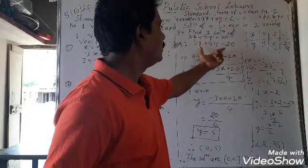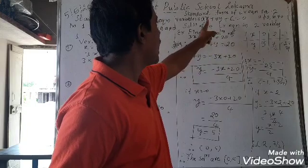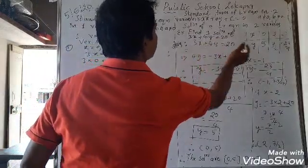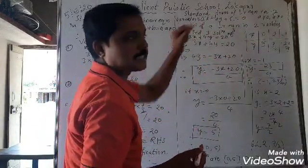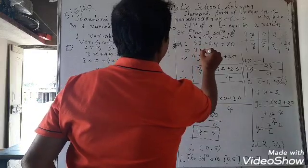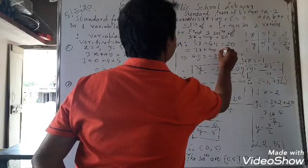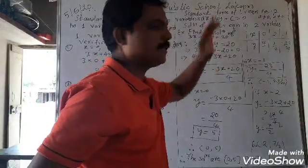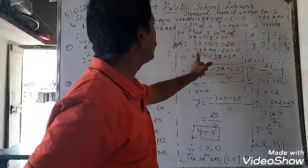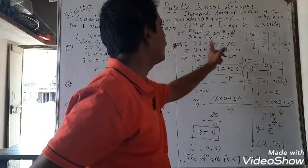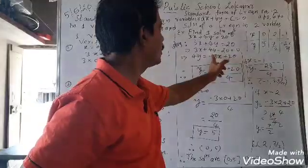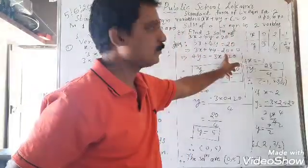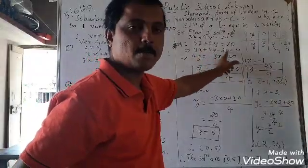If you compare 3x plus 4y is equal to 20 with the standard form ax plus by plus c is equal to 0, you can bring this to standard form. If this plus 20 is brought to this side, it becomes minus 20 is equal to 0. So comparing, a is equal to 3, b is equal to 4, and c is minus 20.